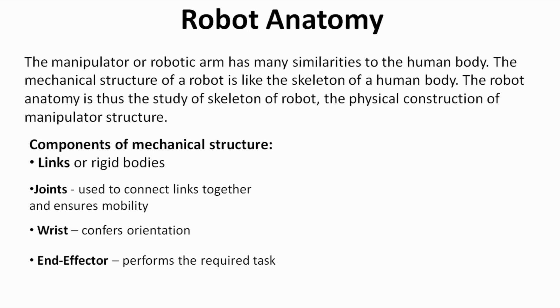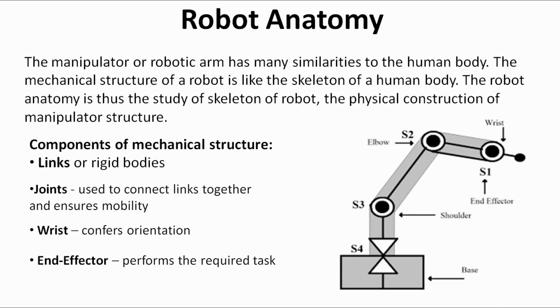A simple manipulator is shown over here. It has a base, shoulder joint, elbow joint, and wrist. At the end of this wrist there is an end effector. It can be a gripper, it can be a welding gun, etc.